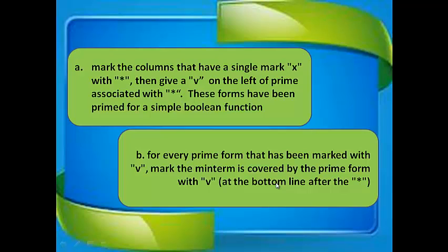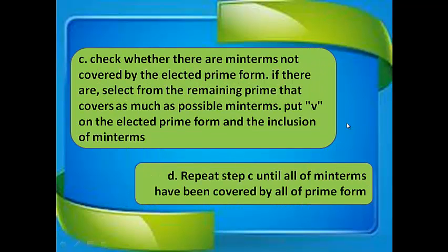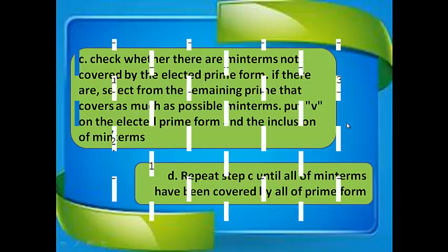Step b: For every prime form that has been marked with a tick, mark the minterms covered by that prime form with a tick at the bottom line after the asterisk. Step c: Check whether there are minterms not covered by the selected prime forms. If there are, select from the remaining prime implicants the one that covers as many minterms as possible. Put a tick on the selected prime form and its included minterms. Step d: Repeat step c until all minterms have been covered by the prime forms.